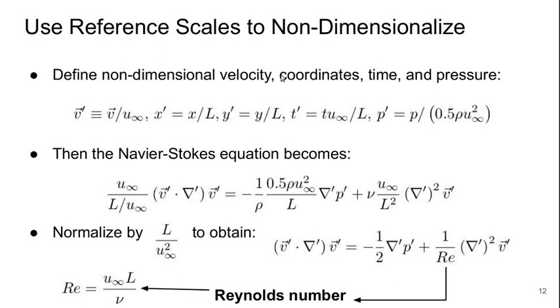The x, y, and if it was 3D, z coordinates would all be normalized with respect to the characteristic length of the vehicle L. Time can be non-dimensionalized by taking time, multiplying by the reference velocity and dividing by the reference length, because velocity divided by length has units of one over time, so time times one over time is dimensionless. Pressure can be non-dimensionalized by normalizing by the free stream dynamic pressure, one half ρu∞².